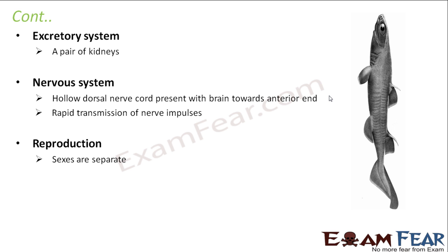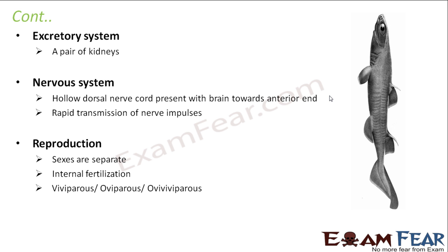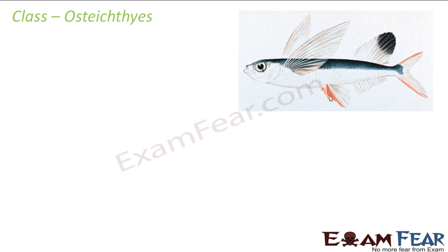Reproduction in Chondrichthyes is sexual, with separate and distinct sexes, and internal fertilization — the fusion of male and female gametes takes place inside the body. They can be viviparous, oviparous, or ovoviviparous: some give birth to young ones, some lay eggs, and some categories can do both.